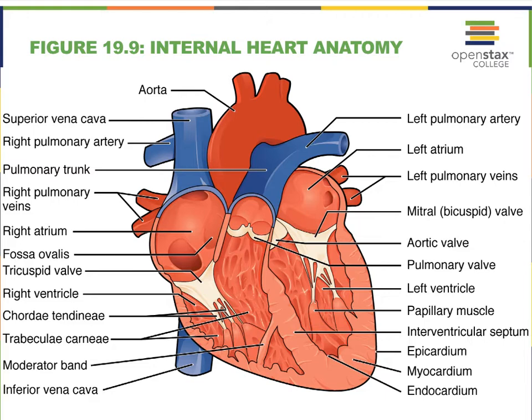It's always easier to understand heart anatomy if we right away label all the chambers. So here we have our right atrium, here we have our left atrium, here we have our right ventricle, and here we have our left ventricle. Notice that the left ventricle once again has a thick myocardium.